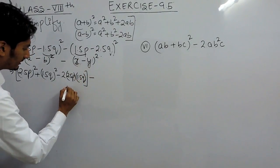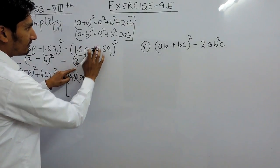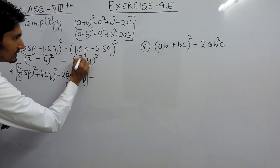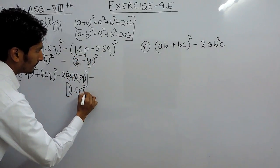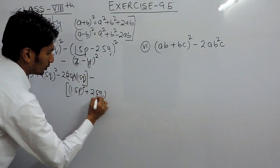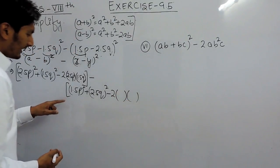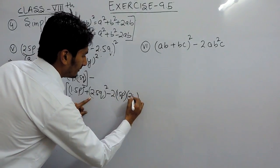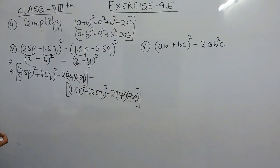Similarly, I want to expand the second term. Again this is x minus y whole square, and the same formula can be applied: x² + y² − 2xy. Our x here is 1.5p, so this would be (1.5p)² + (2.5q)² − 2 × 1.5p × 2.5q. So this is the second expression.